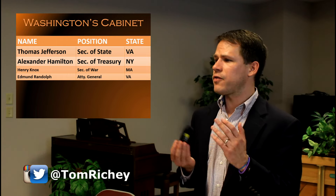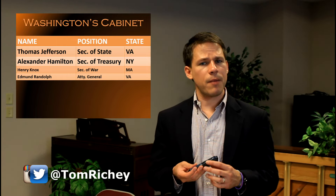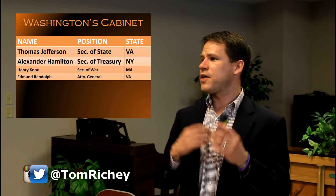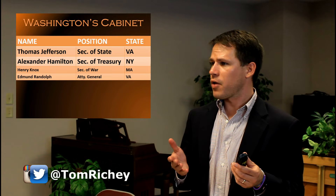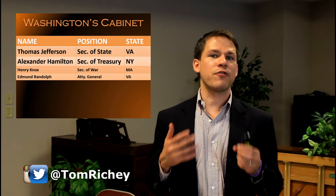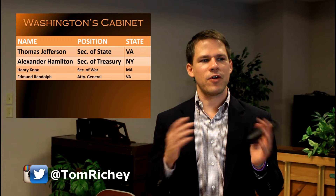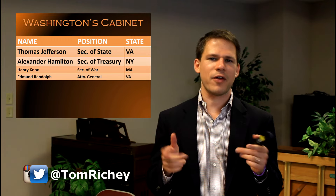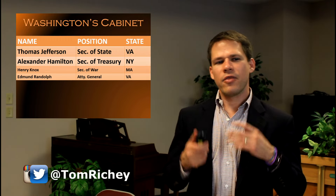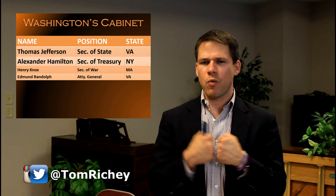You had Thomas Jefferson as Secretary of State and Alexander Hamilton as Secretary of the Treasury. Hamilton had a lot of plans for money, and Jefferson was an advocate of states' rights. They were rivals — but Washington, much like Lincoln, believed in assembling a team of rivals.